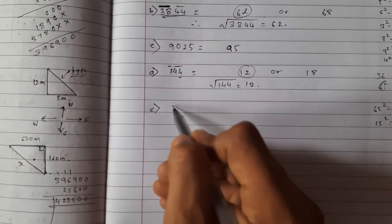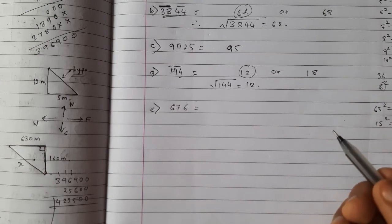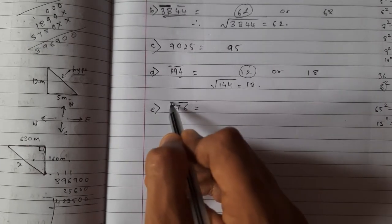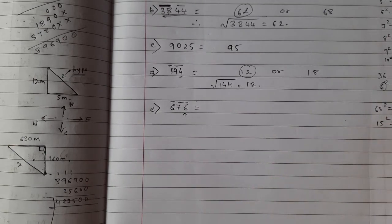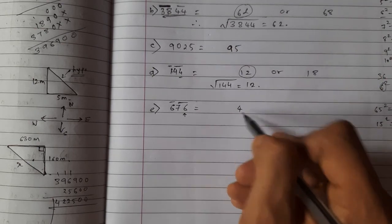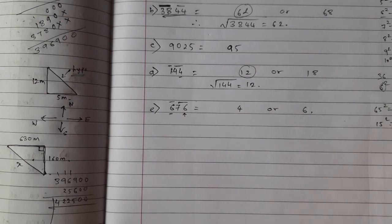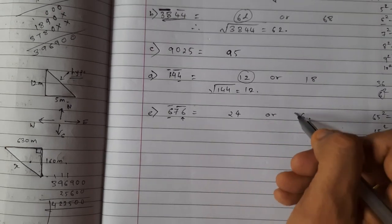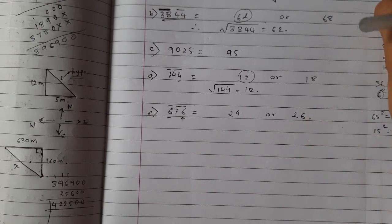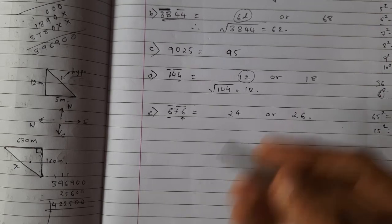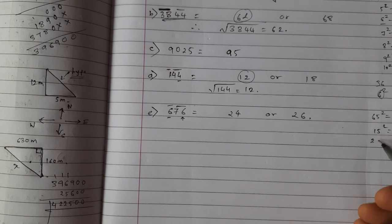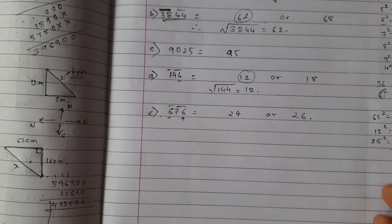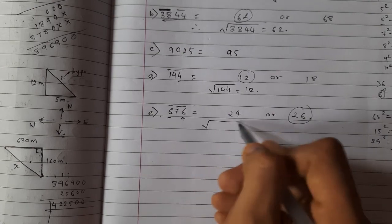For 676: make two groups — 6 and 76. Units digit 6 appears in squares of 4 and 6, so units digit of square root is 4 or 6. The group 6 falls between 4 (2²) and 9 (3²); take 2. Candidates are 24 or 26. Find 25² = 625. Since 676 > 625, square root = 26.